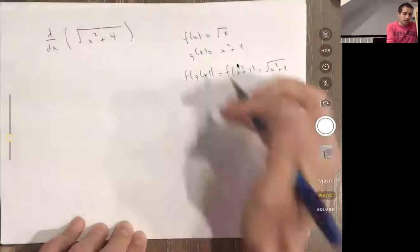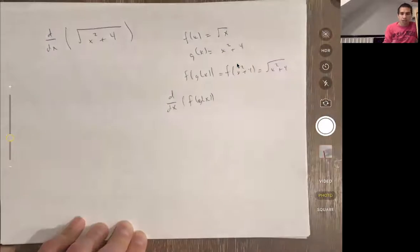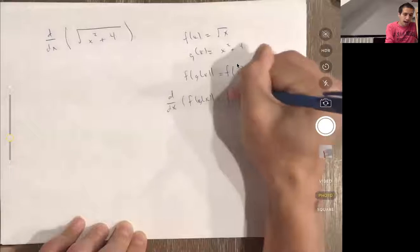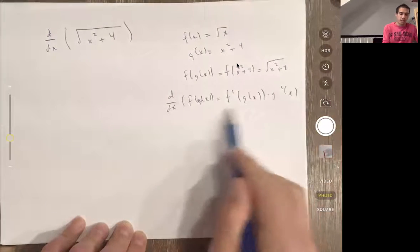Now my goal is to take the derivative with respect to x of f(g(x)). The chain rule says that this should be f'(g(x)) times g'(x). So I just need to figure out what these two things are.